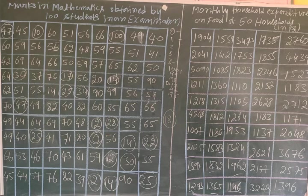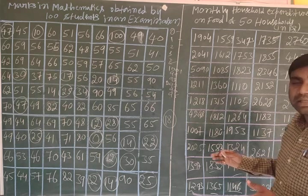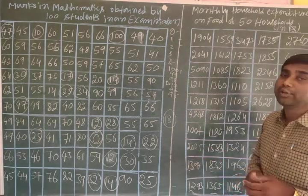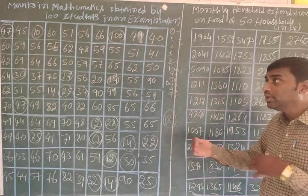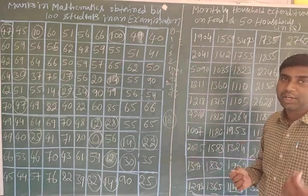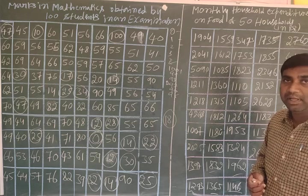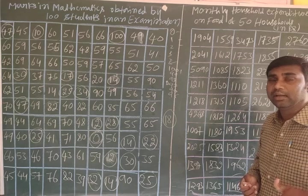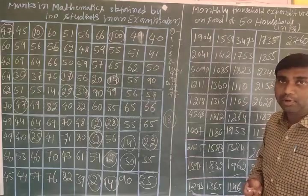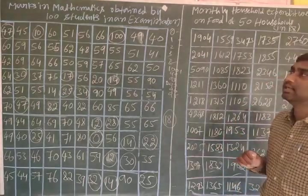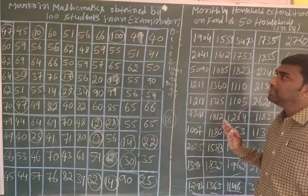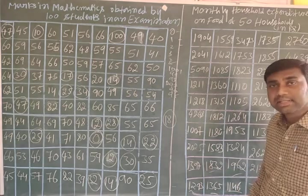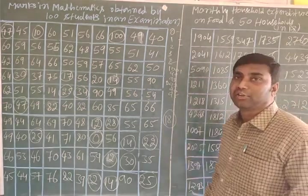Even census surveys like NSSO and all other types use the same method — starting with raw data, then dividing into sectors like male and female, educated and uneducated, occupation, employed and unemployed, poor and rich. This was the explanation about raw data. In the next class we will discuss the classification of data.